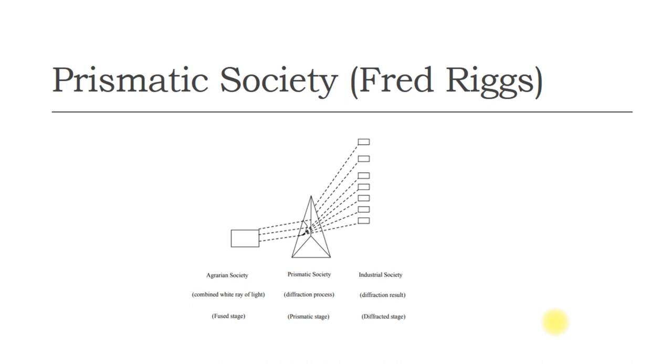Riggs' prismatic model analyzes three societal models: highly developed western societies, traditional agrarian society or Thai societies, and developing societies.